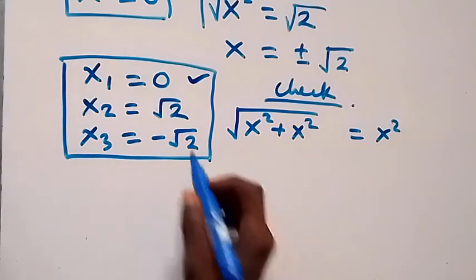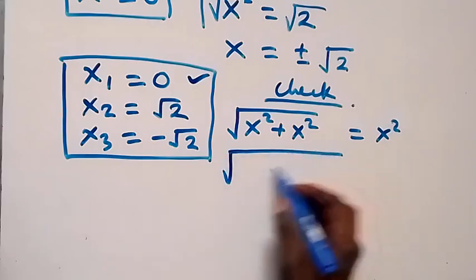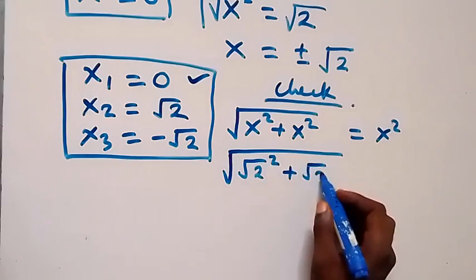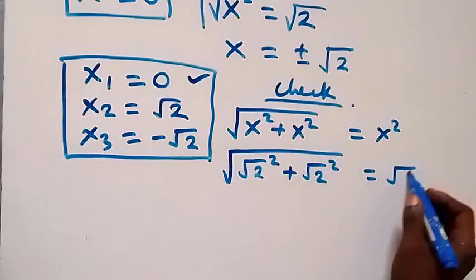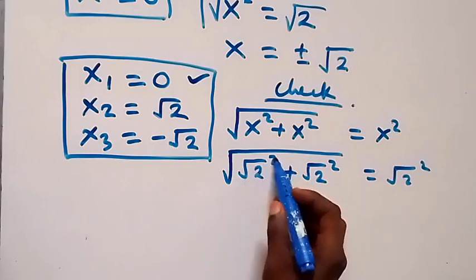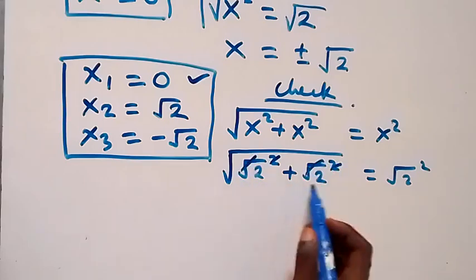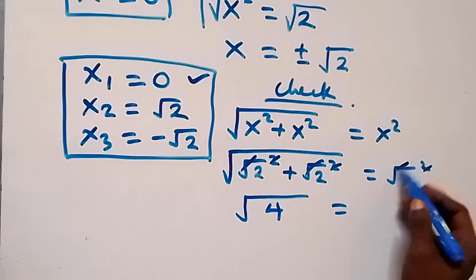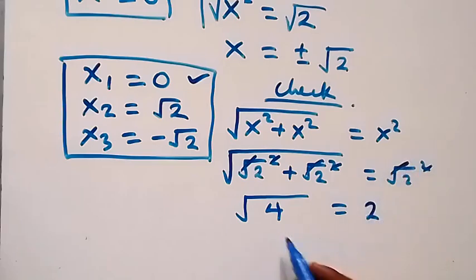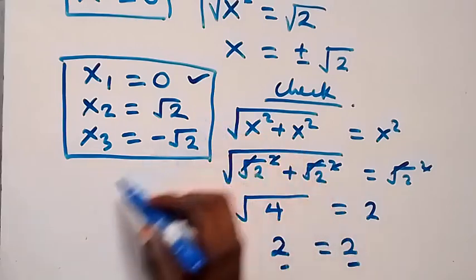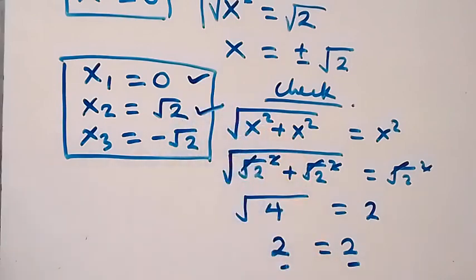Now checking x = √2: we substitute to get √((√2)² + (√2)²) = (√2)². The squares cancel the square root inside, giving √(2 + 2) = 2, which is √4 = 2. Since √4 = 2, the left hand side equals the right hand side, confirming x = √2 satisfies the problem.